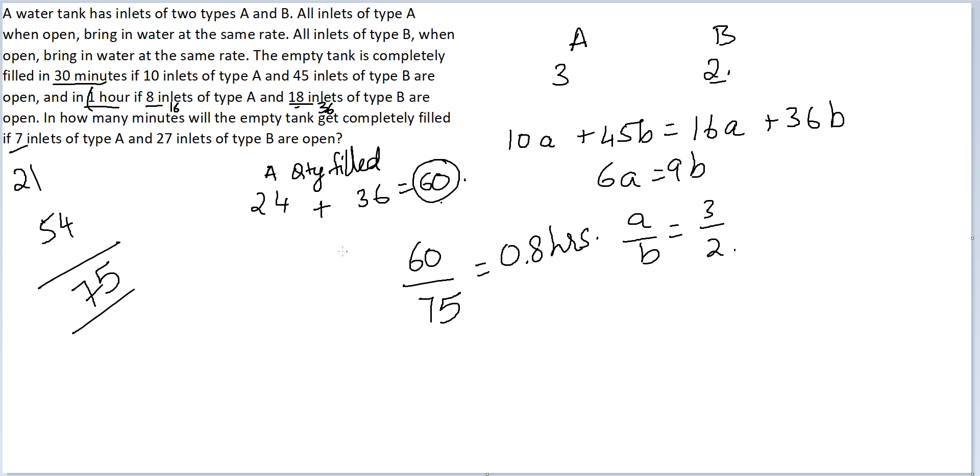Now we cannot write 0.8 hours because they asked me in how many minutes, and therefore the answer would have to be 48 minutes. The key part here being identifying that you have to translate the efficiency of A into B or B into A. Otherwise you cannot proceed forward.